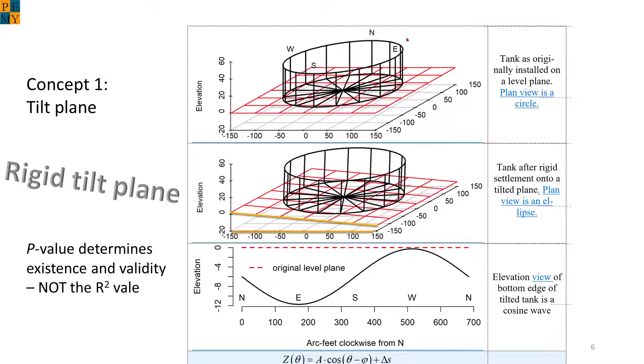Unfortunately, API 653 incorrectly states that for the tilt plane to be valid, the R-squared term, also called the coefficient of determination, must be at least 0.9. We don't have time to go into the statistics involved, but the correct way to determine if a rigid tilt plane exists is called the P-value. For a 95% or higher confidence that there exists a rigid tilt plane, the P-value is 100 minus the 95% level, so the P-value must be less than or equal to 5%. I will introduce this correction as part of the proposal to update API 653.